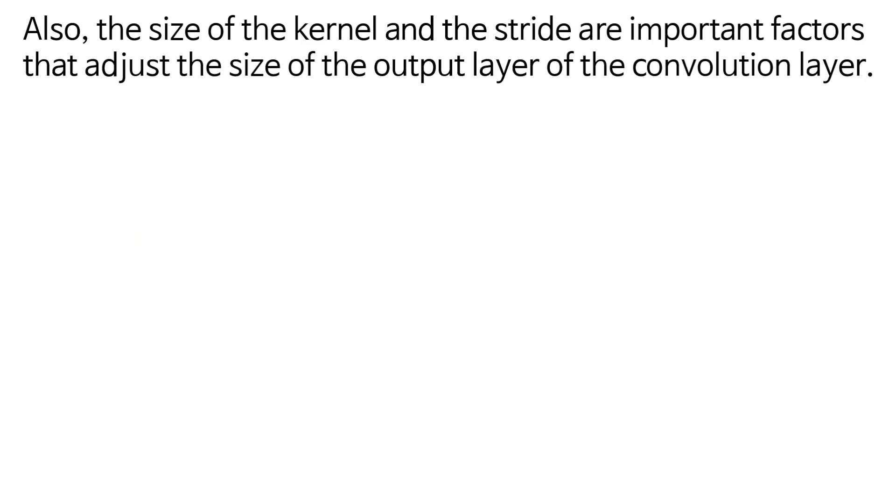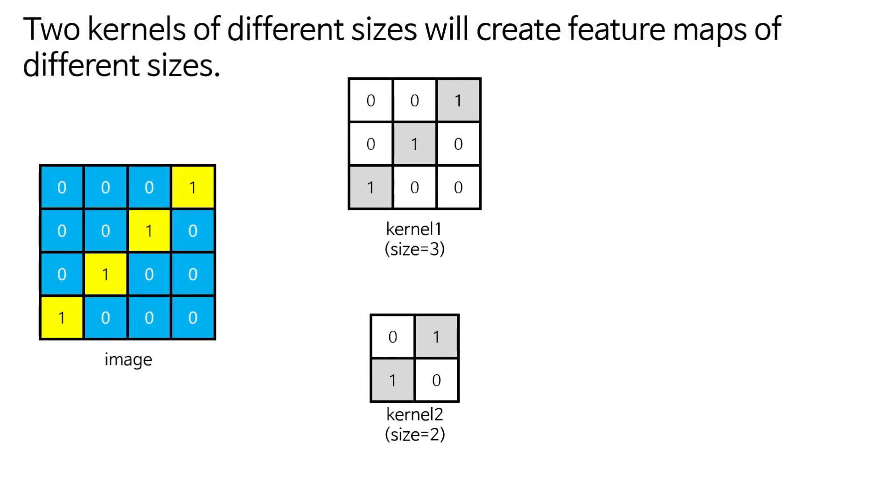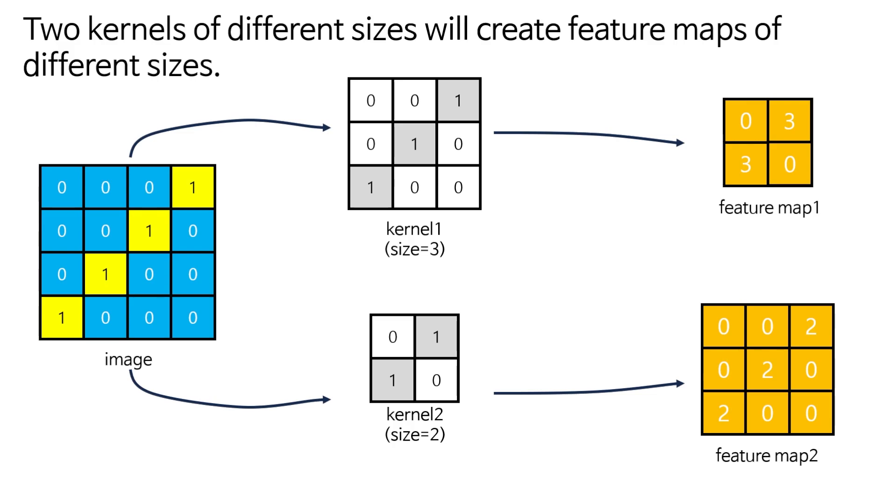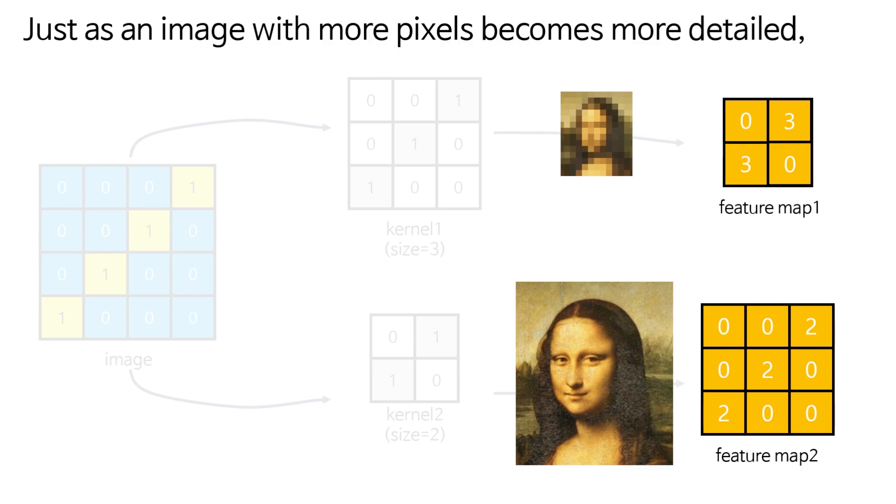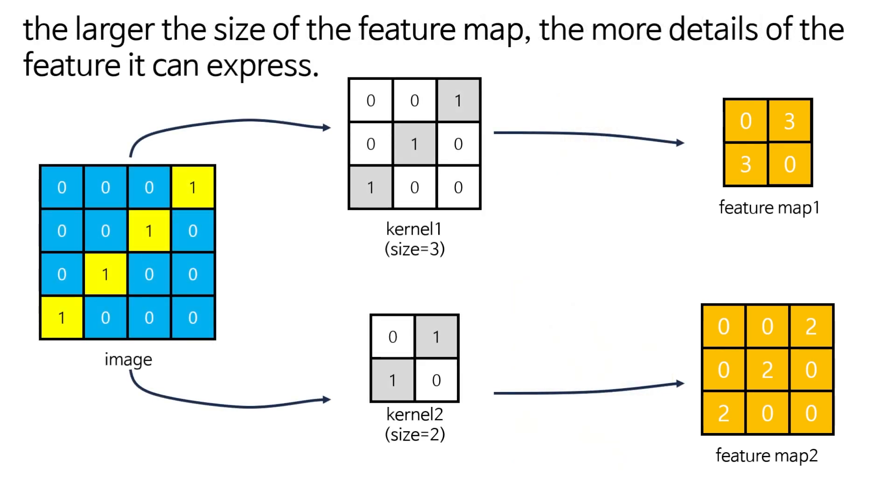Also, the size of the kernel and the stride are important factors that adjust the size of the output layer of the convolution layer. Two kernels of different sizes will create feature maps of different sizes. Just as an image with more pixels becomes more detailed, the larger the size of the feature map, the more details of the feature it can express.